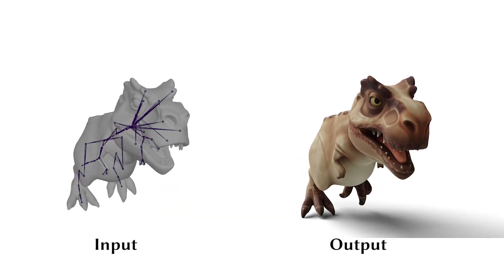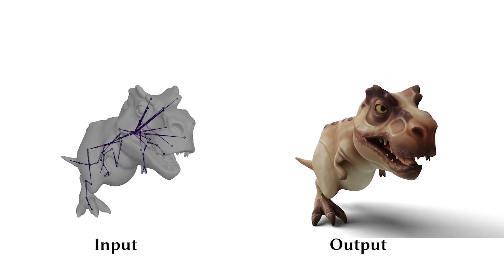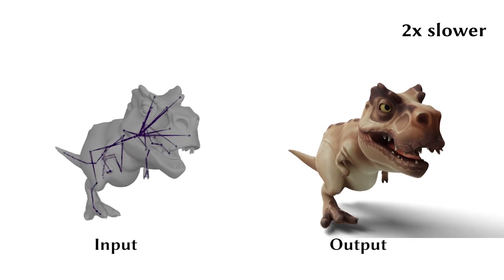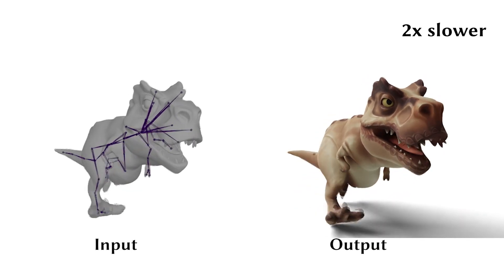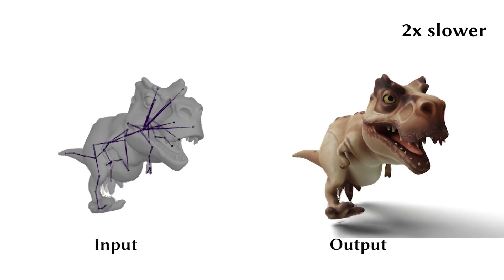Our method can be applied to complex rigs in the wild. This dinosaur model is rigged with a complex set of bones. Despite the wild rig space, our method still finds room for interesting secondary dynamics.